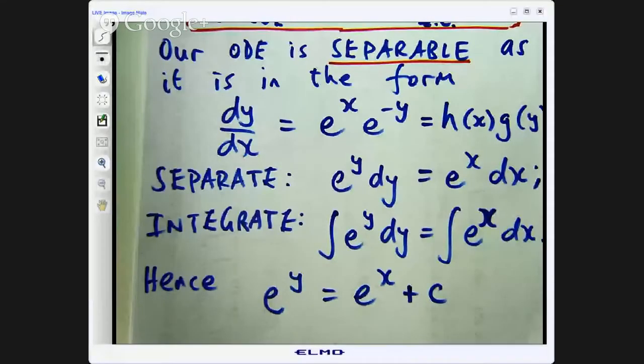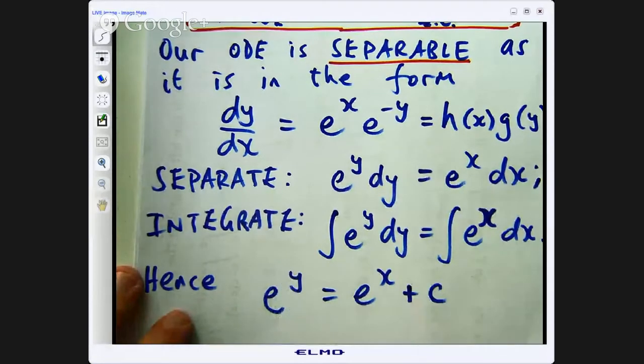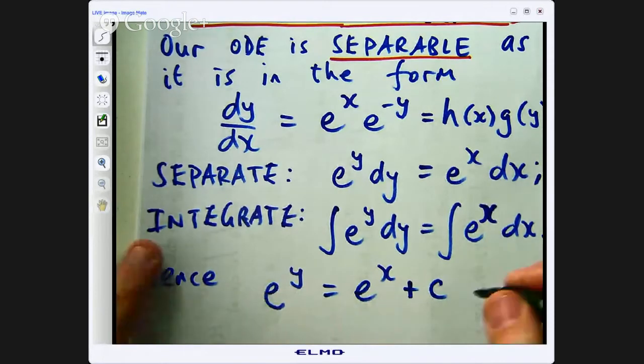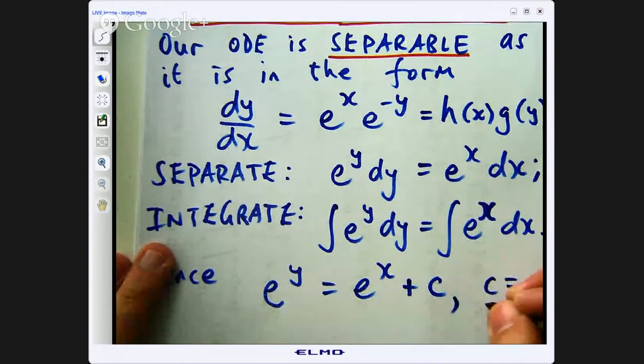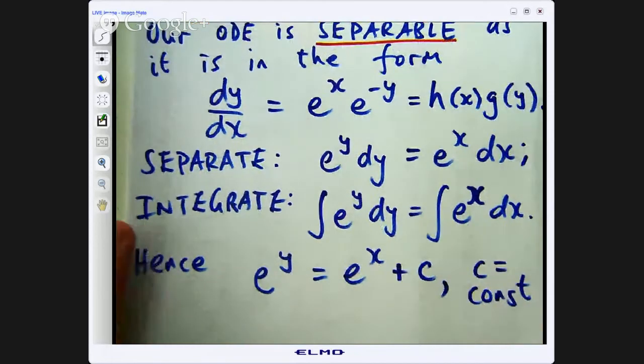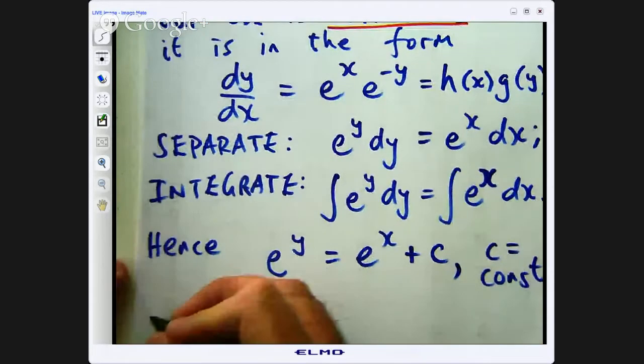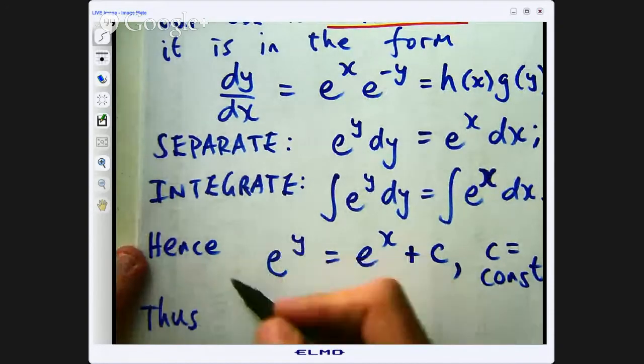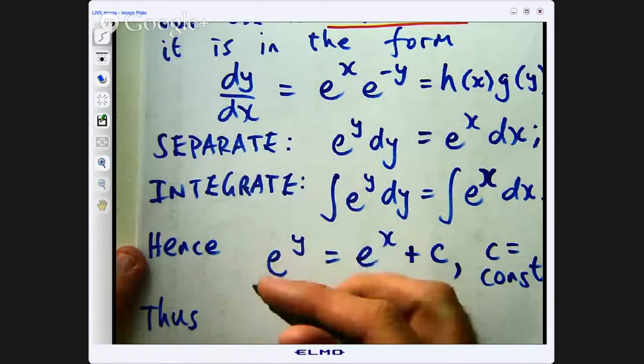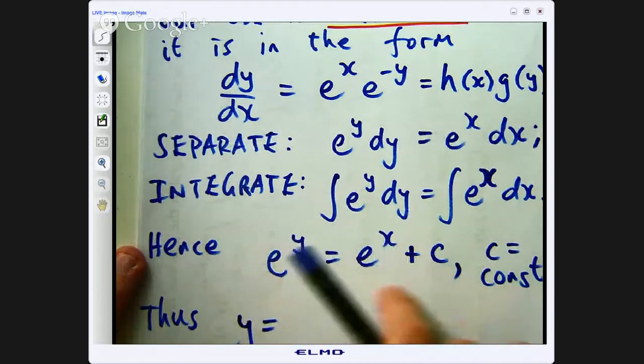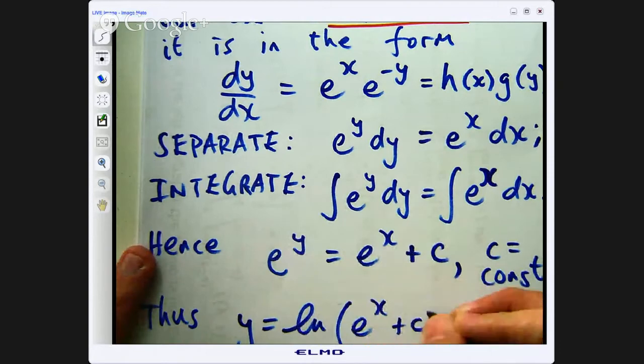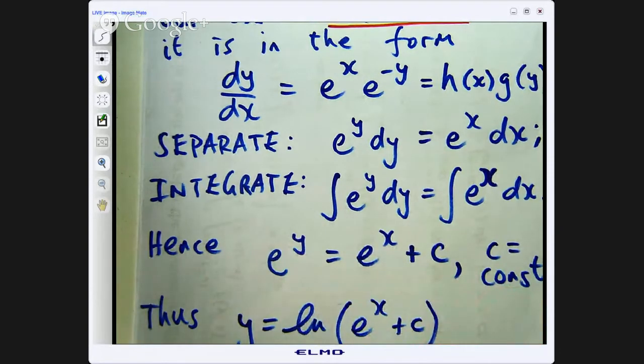So let us make y the subject here. So I am going to take the natural logarithm of both sides. So here c is a constant. So if I take the logarithm of this side, I will have log e to the y. That is going to be y. And if I take logarithm of this side, natural logarithm of this side, I am going to have the following.